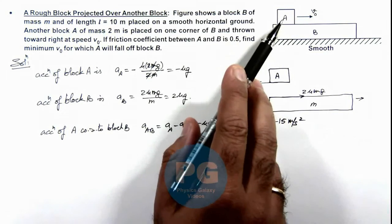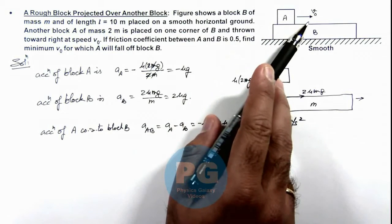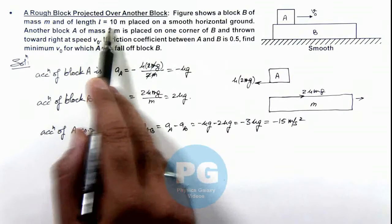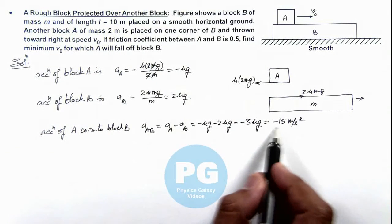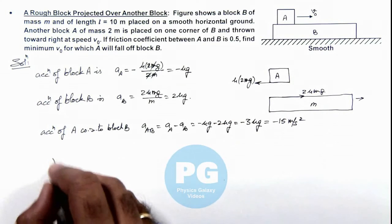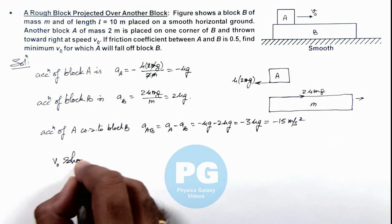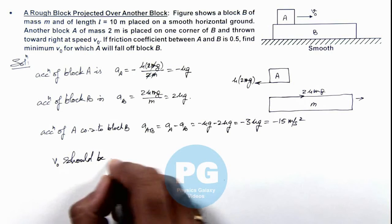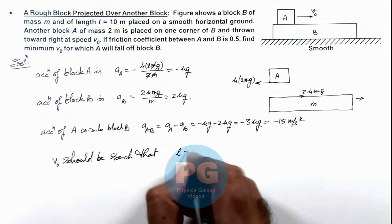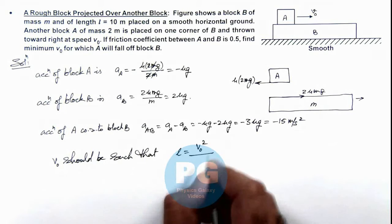And the speed with which block A is projected should be such that it'll not come to rest before traveling L distance if it is retarded by 15 m/s² with respect to block B. So here we can write v₀ should be such that the value of L should be v₀² divided by twice of acceleration of A with respect to B.